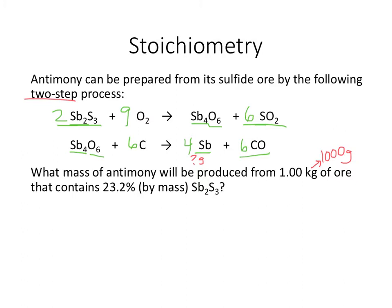The question asks: what mass of antimony (that's SB alone) will be produced from 1.0 kilogram — 1,000 grams — of ore that contains 23.2% by mass of SB2S3? This is actually a percent composition problem and a stoichiometry problem at the same time. 23.2% by mass SB2S3 means out of that 1,000 grams, 23.2% is SB2S3. So 23.2% of 1,000 is 232 grams. So I'm starting with 232 grams of SB2S3. Pause the video and try the rest on your own.